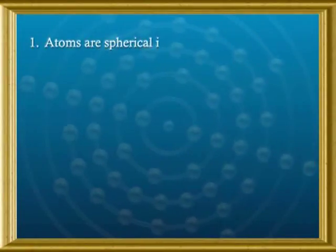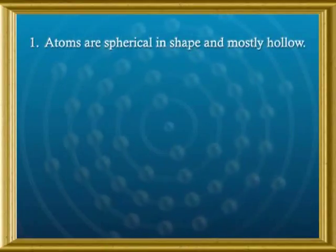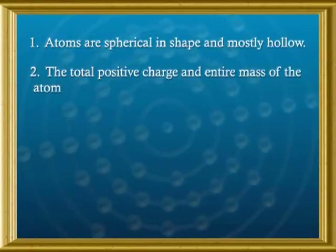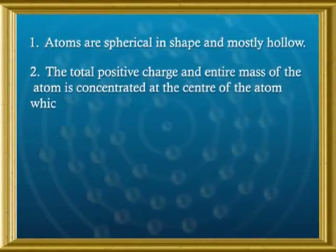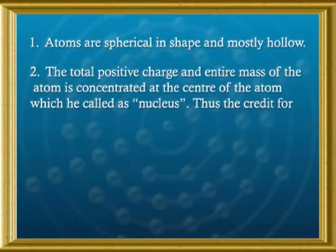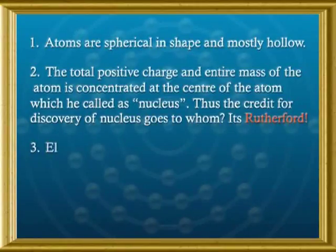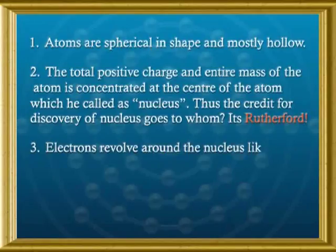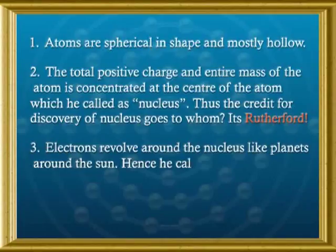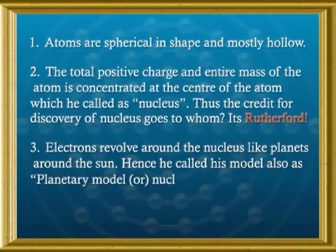In order to rectify the drawbacks in Thompson's model, it was Sir Ernst Rutherford who conducted the X-ray scattering experiment using a thin gold foil. Based on his observations, he proposed an alternate model. His postulates were: atoms are spherical in shape and mostly hollow; the total positive charge and entire mass of the atom is concentrated at the centre, which he called the nucleus — so the credit for the discovery of the nucleus goes to Rutherford. Electrons revolve around the nucleus like planets revolve around the sun, and hence he called this the planetary model or nuclear model.